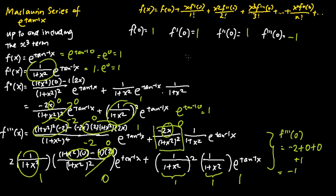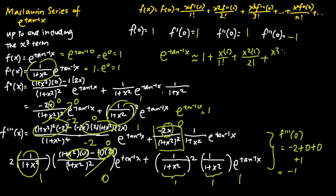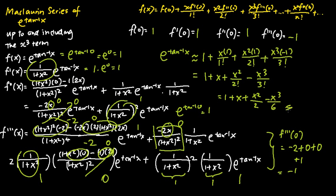Once we have f(0), f'(0), f''(0), and f'''(0), we can find the Maclaurin series of e to the power of tangent inverse x up to and including the x cubed term. The final answer is: e to the power of tangent inverse x is approximately f(0) plus x·f'(0) over 1 factorial, plus f''(0)·x squared over 2 factorial, plus f'''(0)·x cubed over 3 factorial. Substituting values and simplifying, we get 1 plus x plus x squared over 2 factorial minus x cubed over 3 factorial, which simplifies to 1 plus x plus x squared over 2 minus x cubed over 6. This is the final answer to the Maclaurin series of e to the power of tangent inverse x.